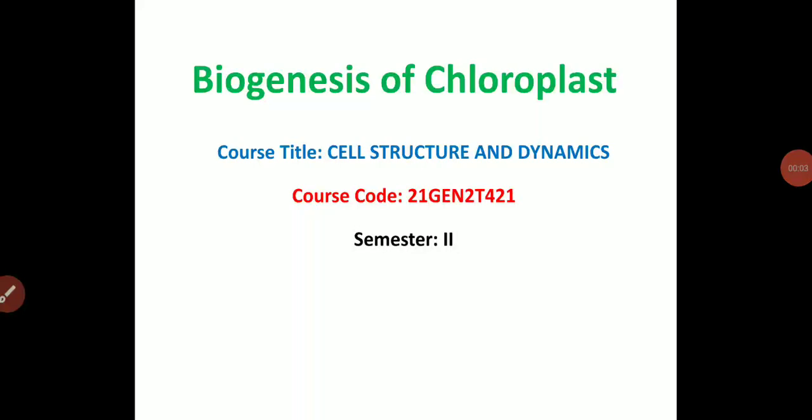Welcome back to the online lecture series on cell structure and dynamics. In this video lecture we are going to discuss a topic on biogenesis of chloroplast. Biogenesis means creation of cells and cellular organelles. Certain cellular organelles like chloroplast and mitochondria are called semi-autonomous organelles.